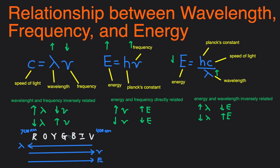Violet will also have more energy than green. And it also matches up with this: energy and wavelength are inversely related. So you can see that energy and wavelength are moving in opposite directions.